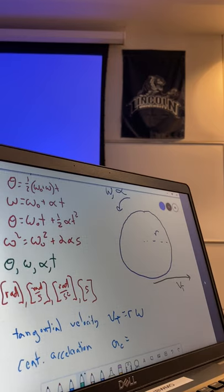Conversely, we also have centripetal acceleration, AC. AC is R omega squared, if I recall correctly. You have tangential acceleration as well, which is R times alpha.